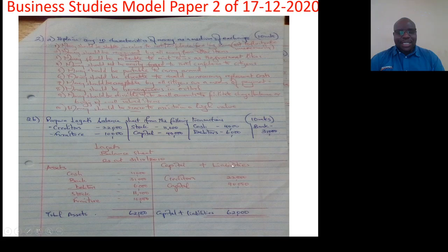So on one side we have assets. On the other side, capital and liabilities. So these are assets. We've mixed them. Cash 4,000, bank 31,000, debtor 6,000, stock 11,000, furniture 10,000. And then creditors 22,000 and capital 40,000. So the total for capital and liabilities is 62,000 shillings, which is also the same figure for total assets, 62,000.